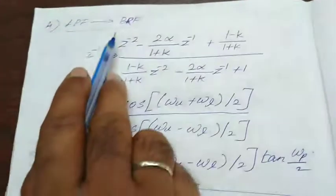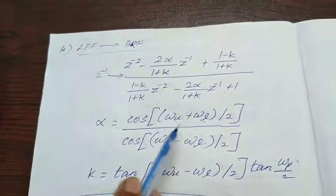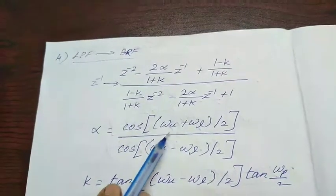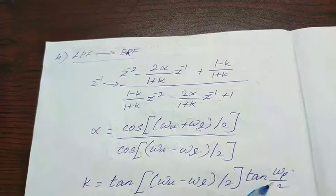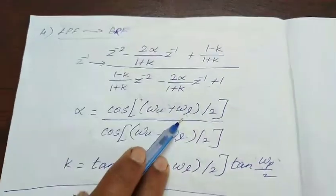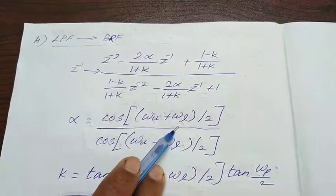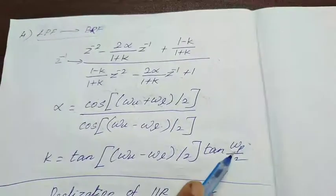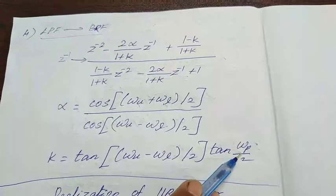The last category is low-pass to band-stop filter, also called a band-reject filter. The transformation equation uses all three frequencies: omega_u (upper cutoff frequency) and omega_l (lower cutoff frequency) of the band-stop filter, as well as omega_p, the passband frequency of the original low-pass filter.